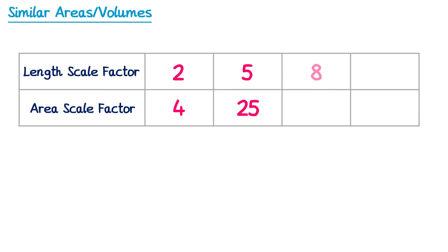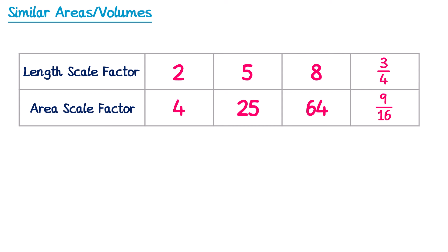If the length scale factor is 8, the area scale factor is 8 squared which is 64. Sometimes scale factors are written as fractions, so if the length scale factor was 3 quarters, the area scale factor would be 3 quarters squared. 3 quarters squared is 3 times 3 over 4 times 4, so 9 over 16.